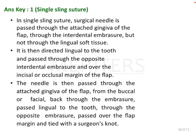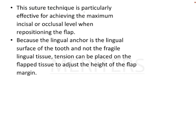In the single sling suture, the surgical needle is passed through the attached gingiva of the flap. After inserting into the flap, the basic anchorage is taken from the tooth — around the tooth. This suture technique is particularly effective in achieving the maximum incisal or occlusal level when repositioning the flap, because the lingual anchor is the lingual surface of the tooth and not the fragile lingual tissue. Higher tension can be placed on the flap tissue to adjust the height of the flap margin.